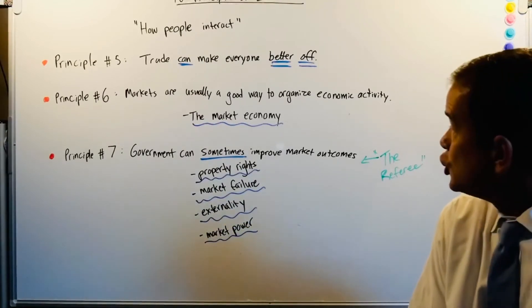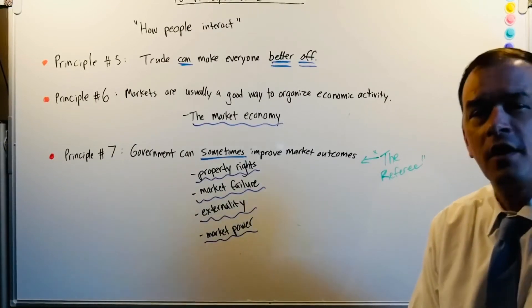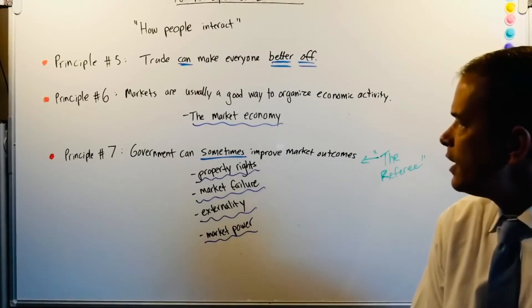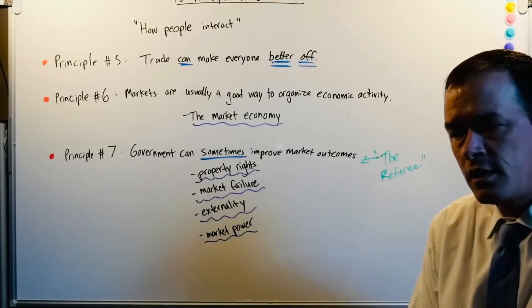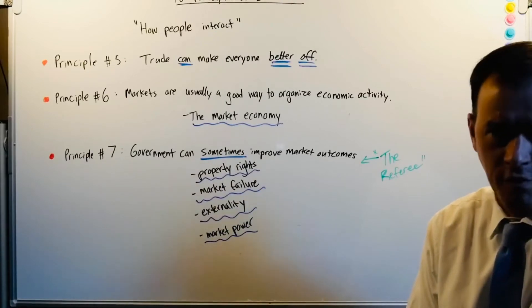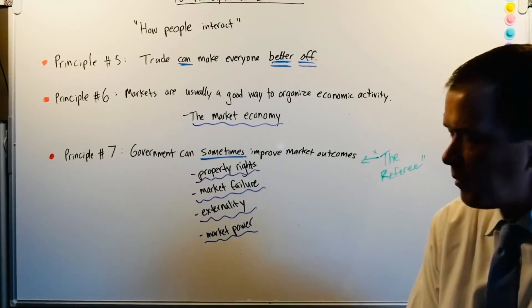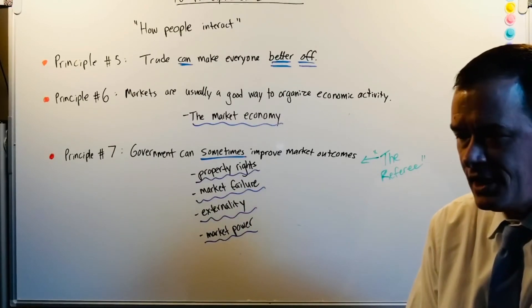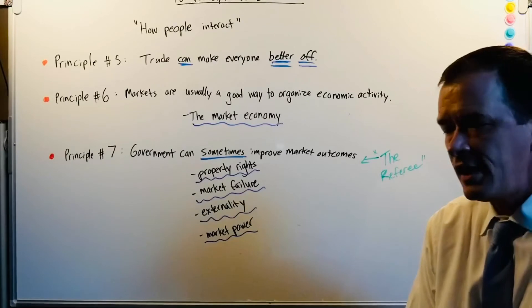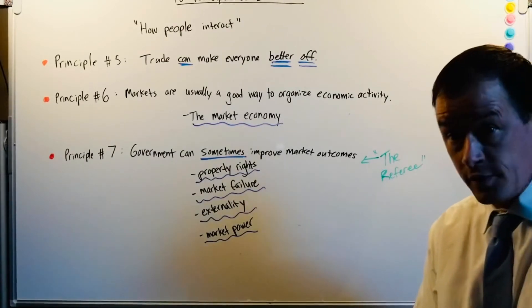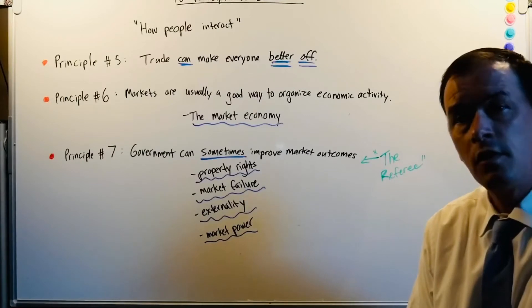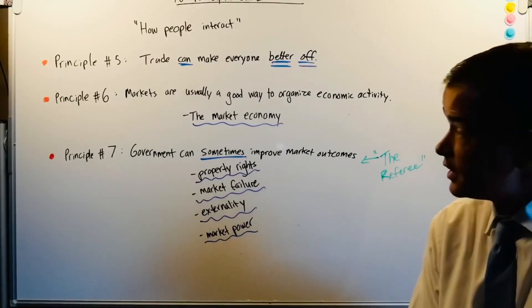Principle number six: markets are usually a good way to organize economic activity. What is the market economy? Simply put, it's a place — physical or virtual — where buyers and sellers come together. The seller, the supplier, is looking to maximize profits and tries to find equilibrium with the buyer who's looking for the best deal. We'll talk about supply and demand as well. It can be as simple as your local grocery store, your local retailer, or Amazon.com. Amazon is a behemoth, but it's also a marketplace — you can go on there this afternoon and start selling whatever you want.